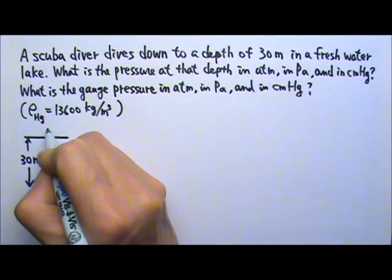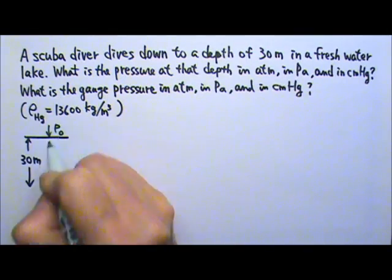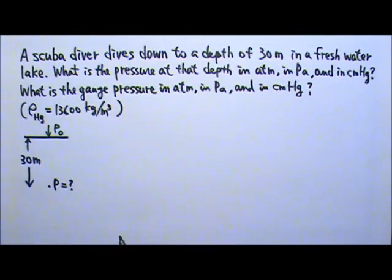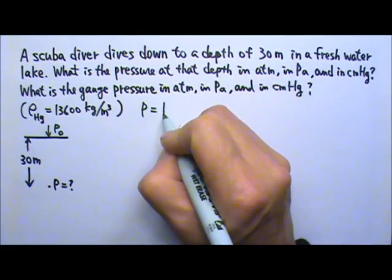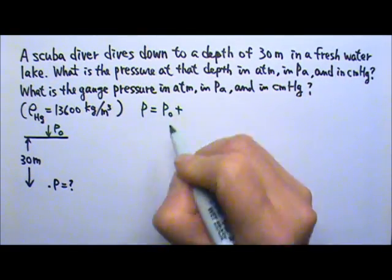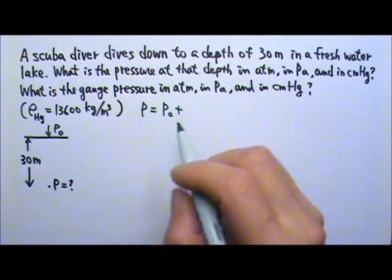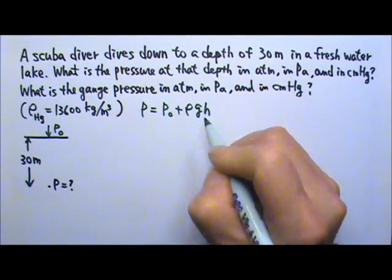On the surface of the lake, we have atmospheric pressure pushing down on the surface of the water. So the pressure down there is the atmospheric pressure plus the pressure from this column of water, ρgh.